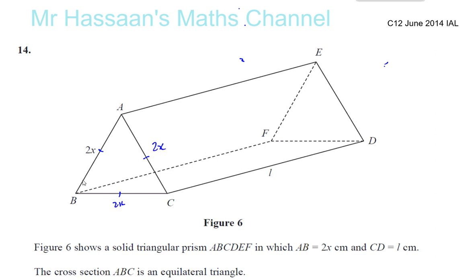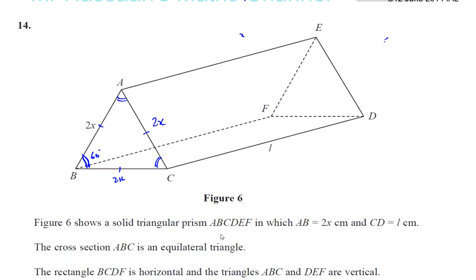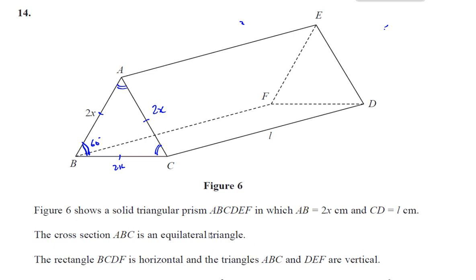We also know that each of these angles are 60 degrees. All these angles are all 60 degrees. And so rectangle BCDF is horizontal and the triangles ABC and DEF are vertical. So it's like a triangular prism.